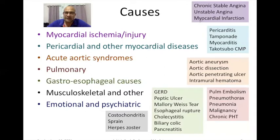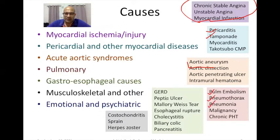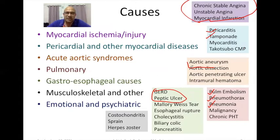Out of these, the ones that should be remembered while dealing with any case in emergency would be: myocardial ischemia, pericarditis, tamponade, aortic dissection, pulmonary embolism, pneumothorax, pneumonia, gastric causes such as GERD and peptic ulcer, costochondritis, herpes, and others. We will take up a few of these causes and discuss them in a little more detail while approaching them from the side of the symptoms — not from the side of disease, as is common in most discussions.